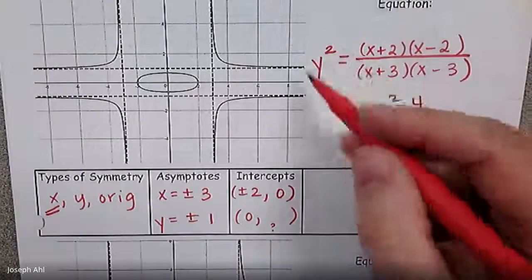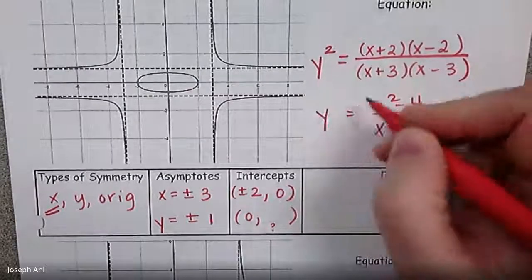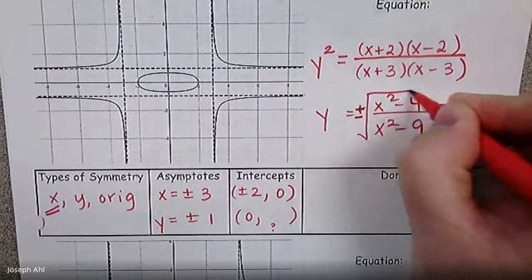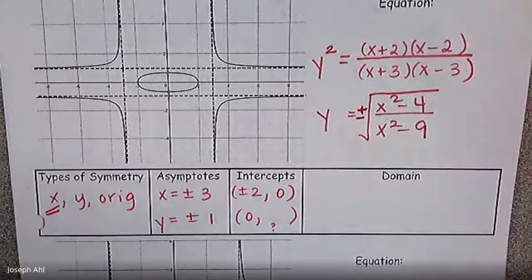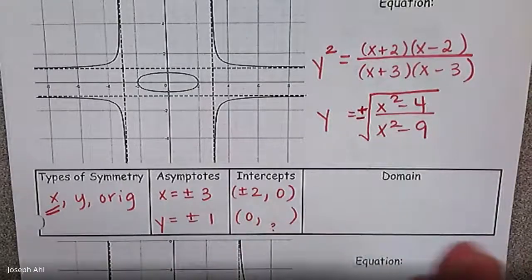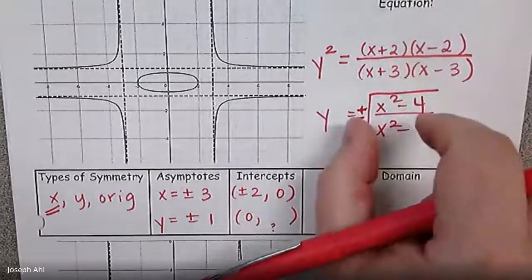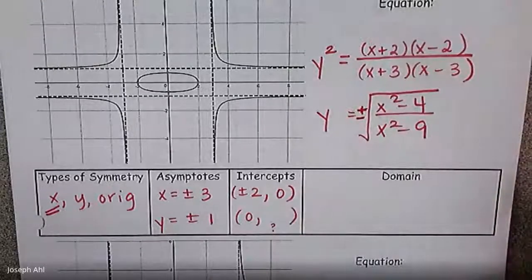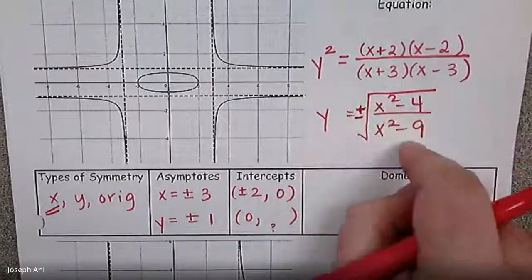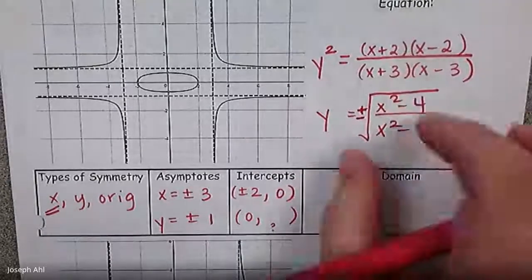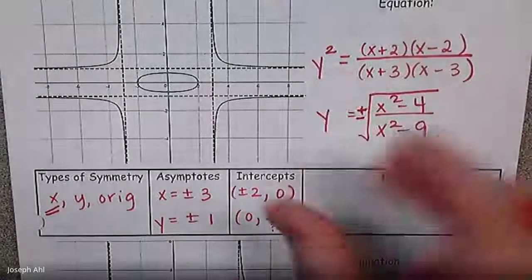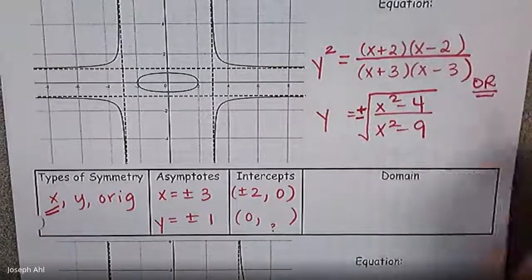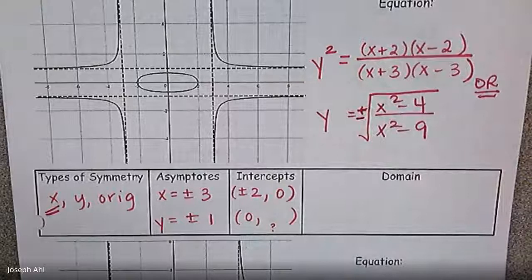Another way of writing this, if you don't like y squared, you can leave it as y equals plus or minus the square root of all of that. So it can be some combination of these two forms. If you like the plus or minus square root with the factored form underneath, go for it. If you like y squared with the multiplied-out version, you can interchange these. You have some options in terms of how you write the equation — you don't have to write both, but either would work.